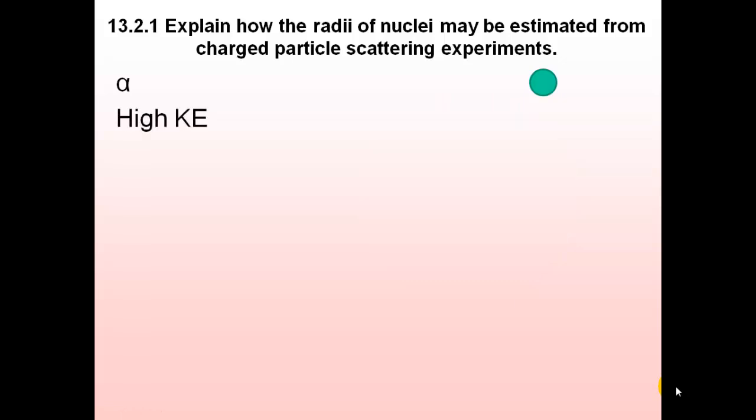So we start off with giving it a high kinetic energy. The way we give it a high kinetic energy is that we ionize the particle. Either we ionize an atom, or we have some radioactive particle, and we can accelerate it using a voltage. So it's got a high kinetic energy to start with, and as far as we're concerned, it's at infinity distance away, so it has zero potential energy.